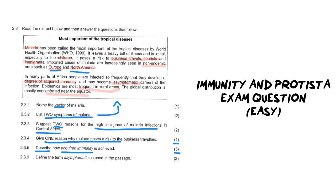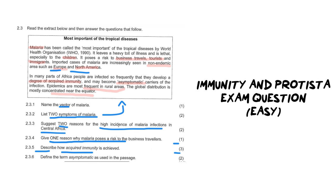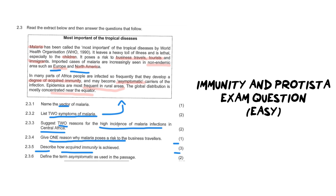The final question is: define the term asymptomatic. When we speak about asymptomatic we are speaking about individuals that have no symptoms. The 'a' at the beginning means not having — so not having any symptoms. In the passage they're saying that people become asymptomatic carriers of the infection, which means they carry the disease but feel or experience no symptoms of malaria.